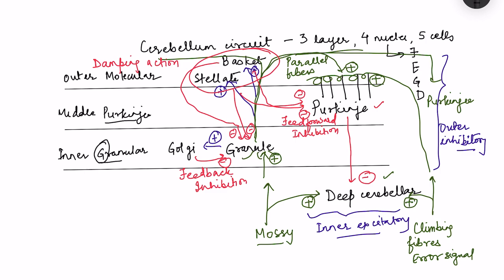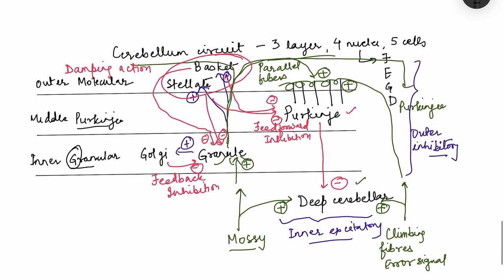Quick revision: three layers — outer molecular layer with basket and stellate cells; middle Purkinje layer with Purkinje cells; inner granular layer with granule and Golgi cells. There are four deep cerebellar nuclei located deep within the cerebellum. Five cell types: granule cells, Golgi cells, Purkinje cells, basket cells, and stellate cells.